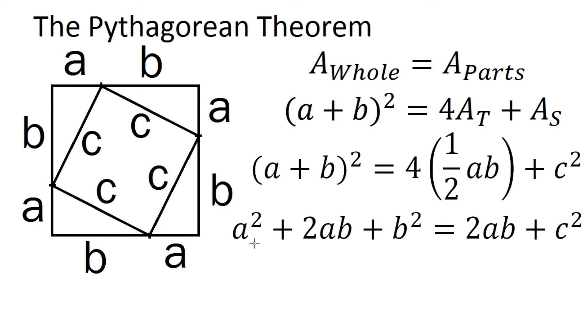When you actually start to simplify this out, on the left hand side, you get a squared plus 2ab plus b squared when you multiply this out. And on the right hand side, this 4 multiplied by this one half is just going to give you 2ab plus c squared. And now you'll notice that both sides have a 2ab, so you can subtract that out. And as you might guess, you're just left with a squared plus b squared equals c squared, which is the Pythagorean theorem.